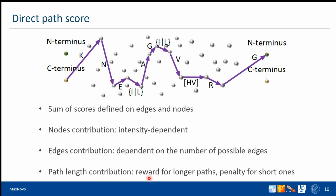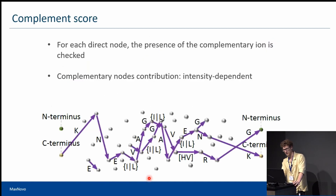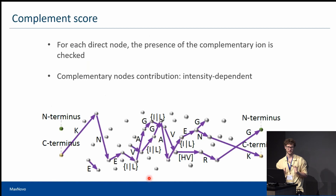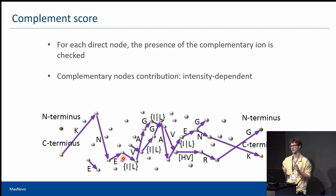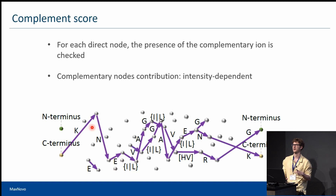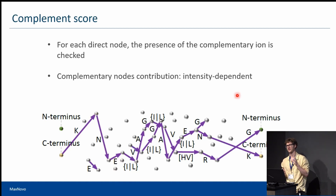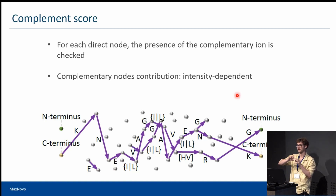The path length contribution rewards longer pathways because we are interested in more complete sequences. Although we construct pathways using only nodes from a single ion series, we do not discard information from the complementary ion series. When we construct the direct pathway, we check for complementary ions, and if found, they affect our score in the same intensity-dependent manner as direct nodes. Complementary ions can also resolve our two amino acid steps if we find complementary ions at the place of missing ions in the direct pathway.